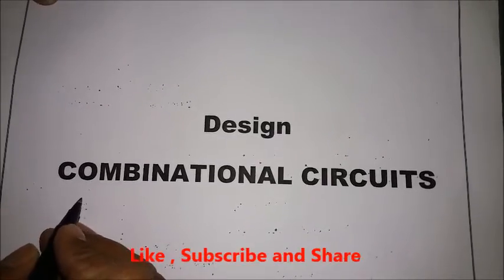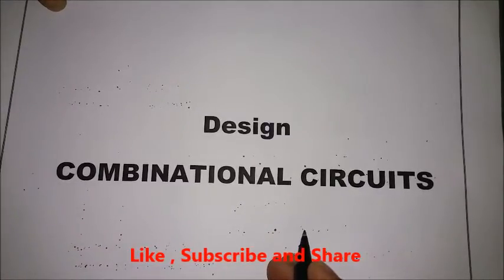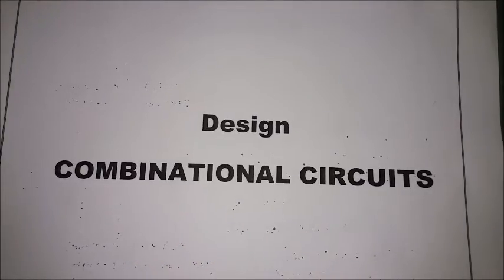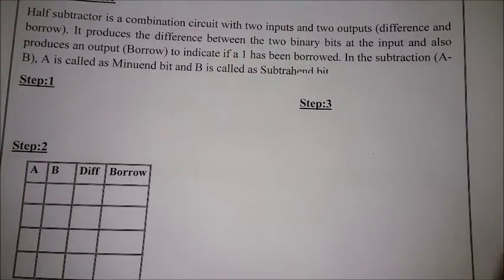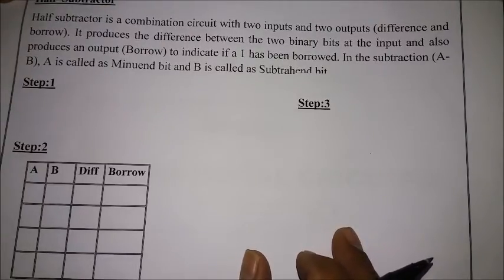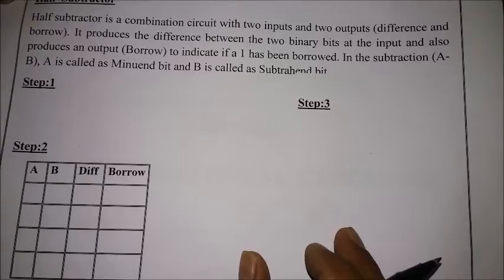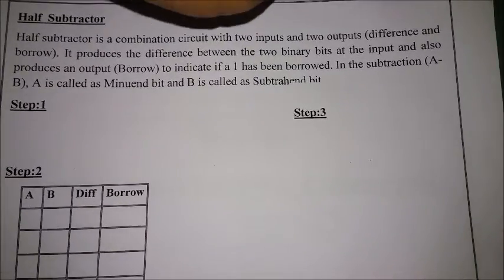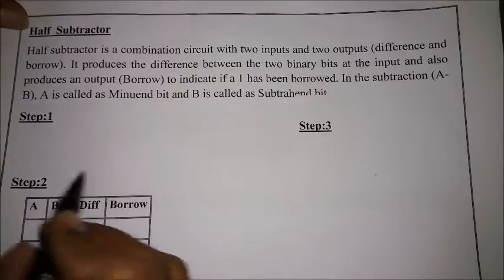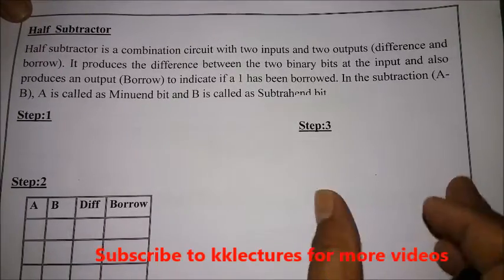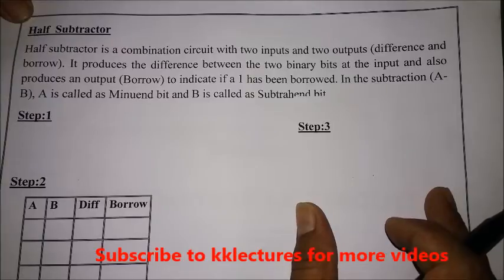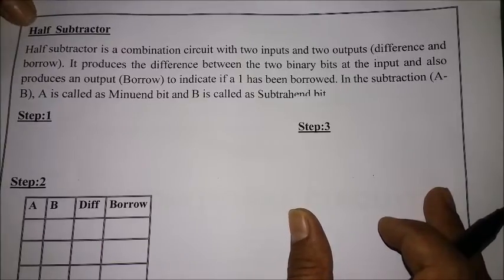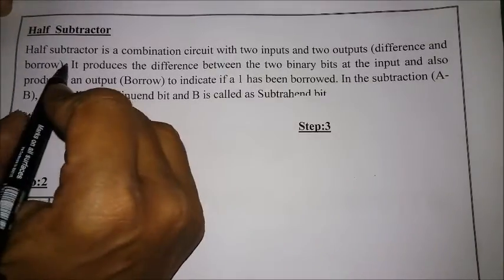Hi everyone, today in this video we will be covering combinational circuits. As we have said in the previous lectures, we have completed the half adder and full adder, and in this video we will be covering the half subtractor and full subtractor. The designing procedure involves five steps: first, identifying inputs and outputs; second, the truth table; third, the block diagram; fourth, K-maps; and fifth, drawing the logic circuit.